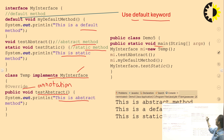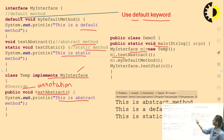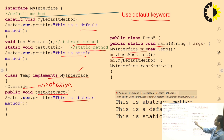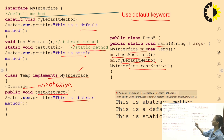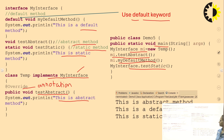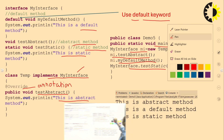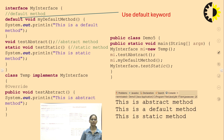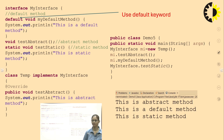In the public class Demo, you create an object — myInterface mi = new impl(). You then call all the methods declared inside your interface: mi.testAbstract() for the abstract method, mi.myDefaultMethod() for the default method, and MyInterface.testStatic() for the static method. This shows how the default keyword enables concrete declarations and definitions inside an interface.